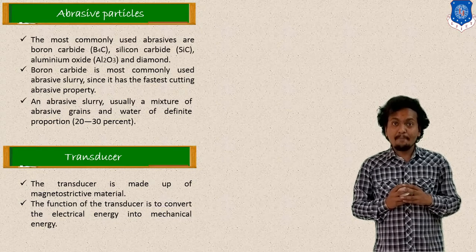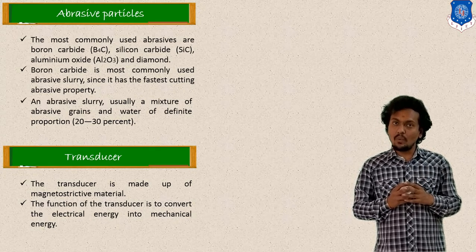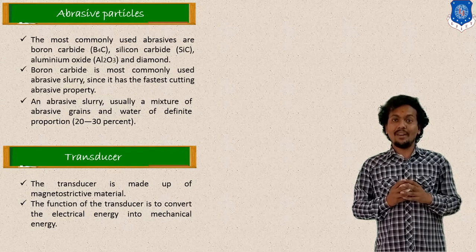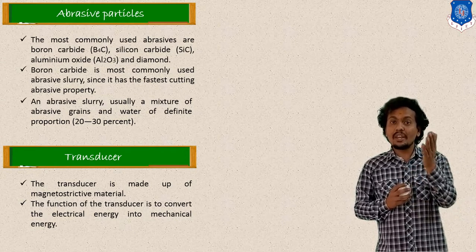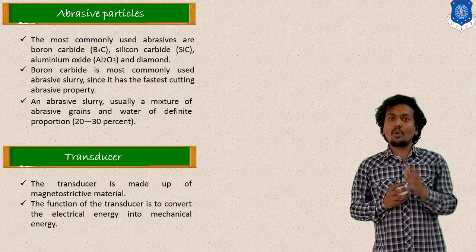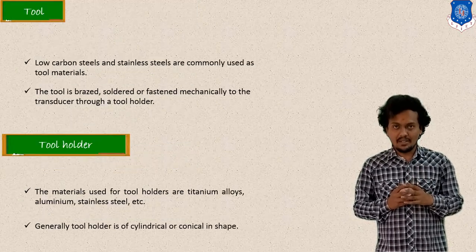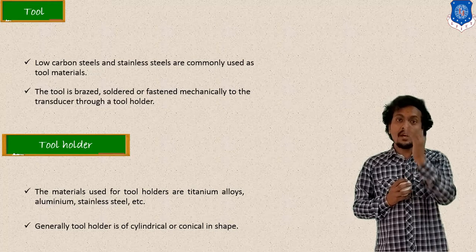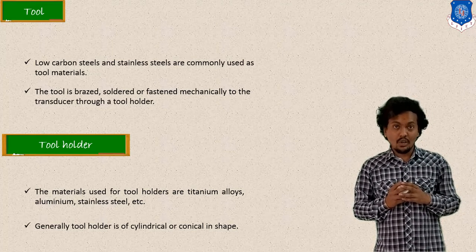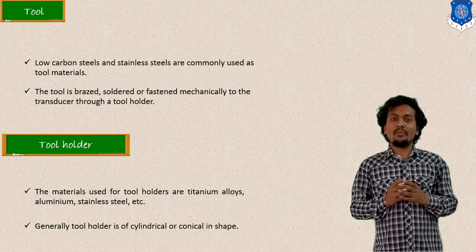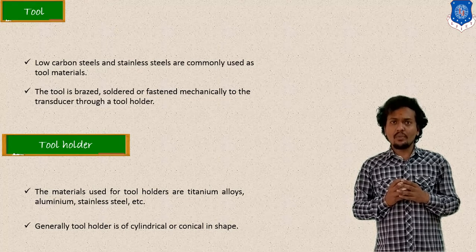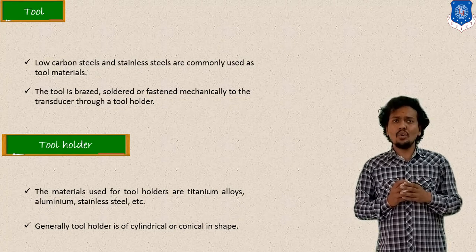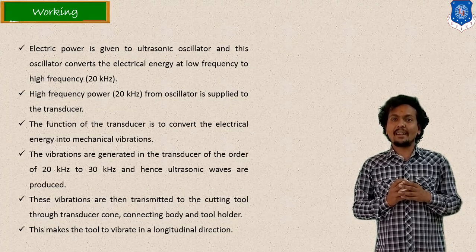The function of the transducer is to convert electrical energy into mechanical energy — that is, into vibration motion. The tool is also very important; it should be harder and its purpose is to provide the cutting action. The tool holder holds the tool firmly and acts as a bridge between the transducer circuit and the workpiece.